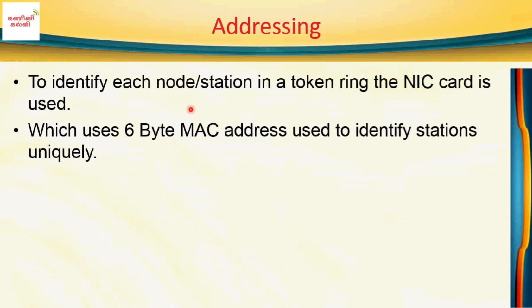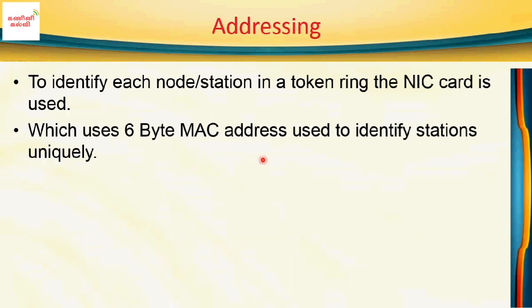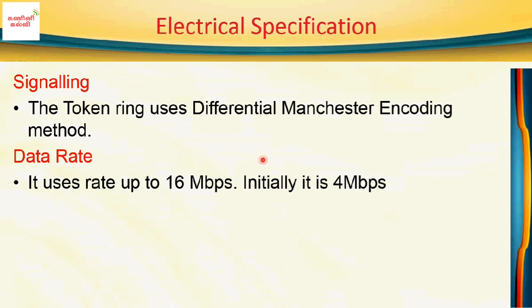To identify each node or station in a token ring, a NIC card is used, which uses a 6-byte MAC address. The MAC address is a physical address represented in hexadecimal using a 48-bit address format. It is used to uniquely identify stations, and is 6 bytes long.